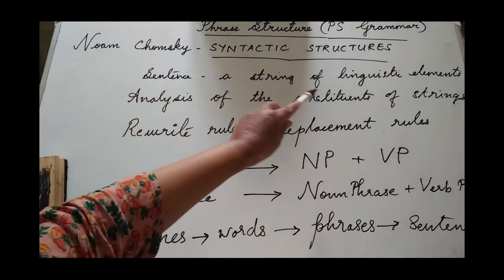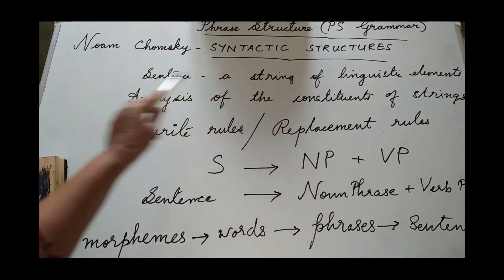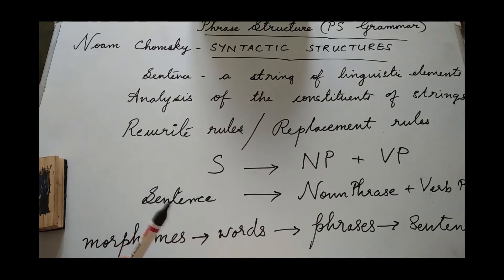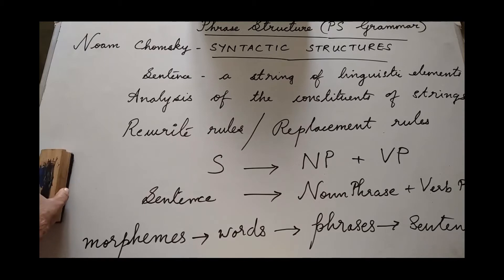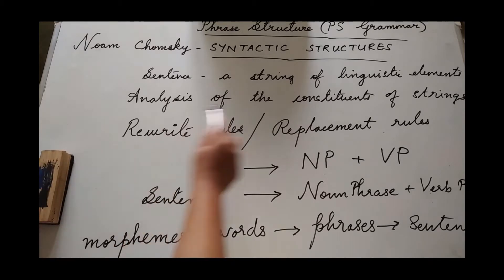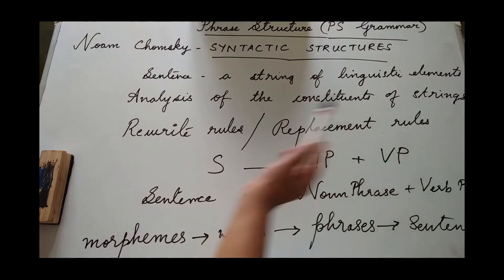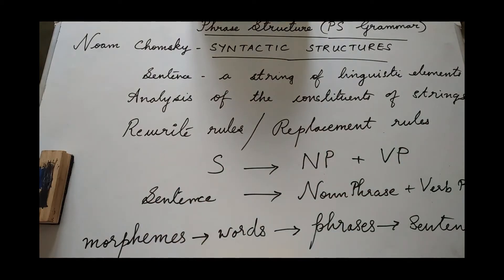Every sentence is a string of linguistic elements. As we all know, morphemes combine together to form words, and words combine together to form phrases, and phrases join together to constitute a sentence. The analysis of each of the constituent elements in a sentence is made possible by way of Phrase Structure Grammar, or PS Grammar.